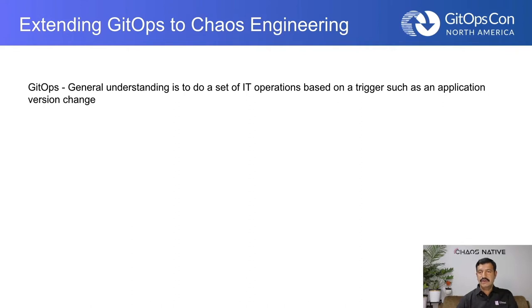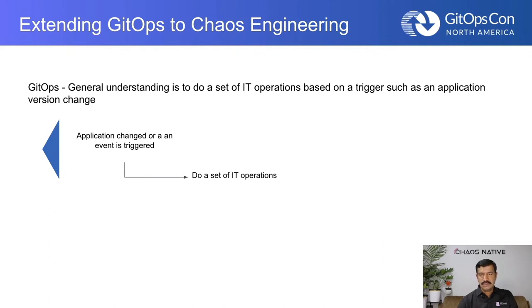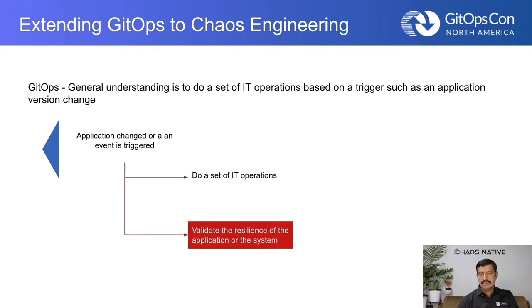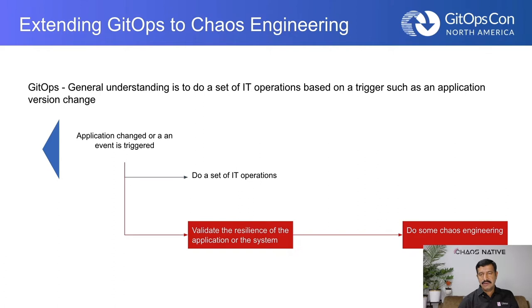In general, the idea of GitOps is to do a set of operations whenever there's a change to an application. You can use the same principles to extend whatever you're doing to include validation testing as well. You can do chaos engineering whenever there's an application change on your existing deployments — that's the idea of extending GitOps to do chaos testing so that you retain or improve the reliability of your system whenever there is a change.